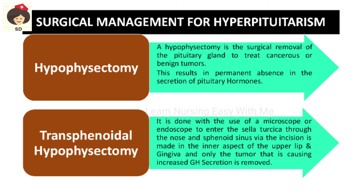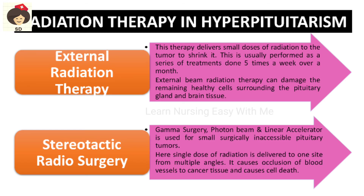In radiation therapy, external radiation therapy exposes the whole pituitary gland to radiation from outside, done five times a week over a month to suppress the pituitary gland. The problem is it can damage not only the pituitary gland but also surrounding brain tissue. A more focused form is stereotactic radiosurgery, which uses a gamma knife, photon beam, or linear accelerator to target pituitary tumors — only the blood vessels supplying the pituitary tumor tissue are occluded, causing the tumor tissue to die from lack of blood supply.